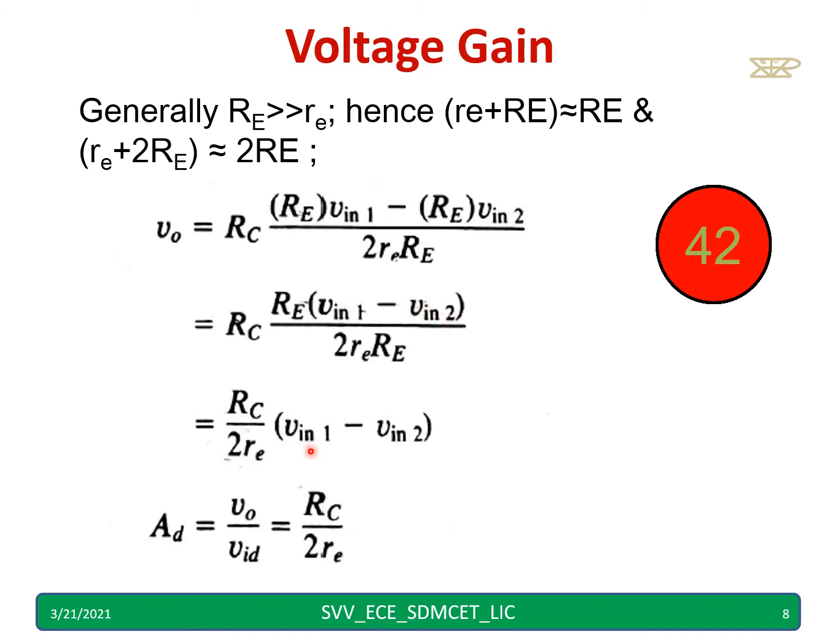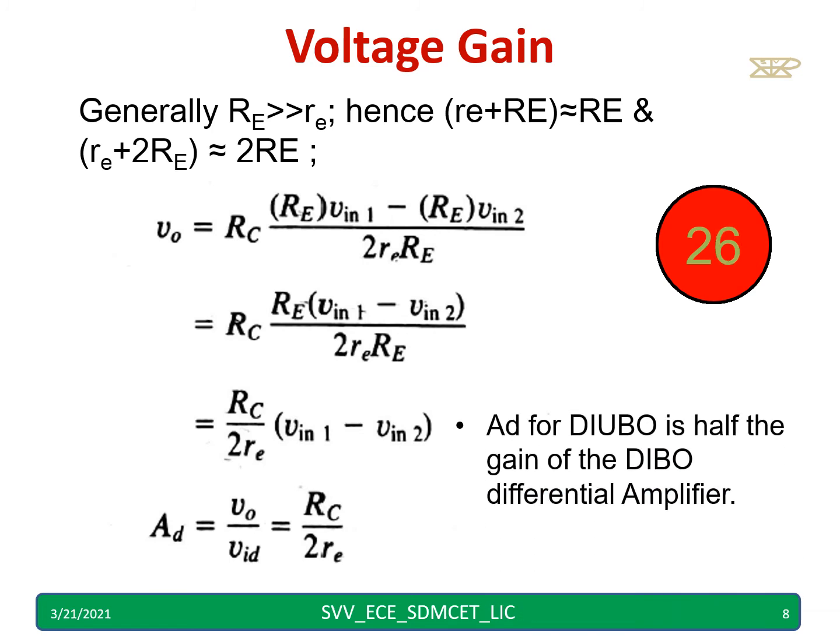And RC as it is divided by 2RE. What I will get? re, RE if you get cancelled. So VIN1 minus VIN2 I will get. Therefore, AD equal to V0 by VID. VID is nothing but VIN1 minus VIN2. Therefore, RC by 2re. I will get AD equal to. There is a voltage gain equal to. AD for dual input unbalanced output is half of the gain of the dual input balanced output differential amplifier.